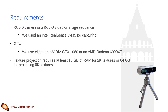The system requires at least an RGBD image sequence or a video. Our sequences were captured with an Intel RealSense D435 RGBD camera. To run, Open3D Gen also requires a GPU with support for GLSL 4.6. In our case, we used either an NVIDIA GTX 1080 or an AMD Radeon 6900 XT. The texture projection stage requires at least 16GB of RAM for 2K textures and up to 64GB for 8K textures with sequences of moderate length.